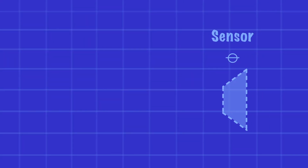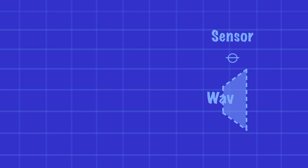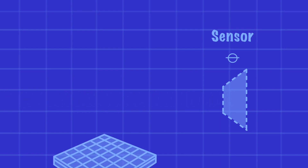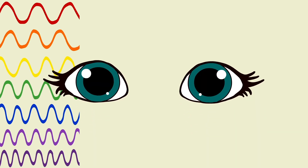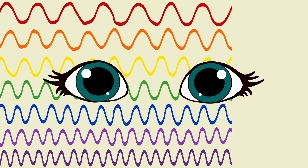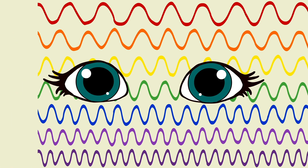Now, let's look at how the sensor works to register these waves of light. To understand the camera sensor, we need to first understand why it was designed the way it was. To do this, we have to look at how our own eyes perceive light.